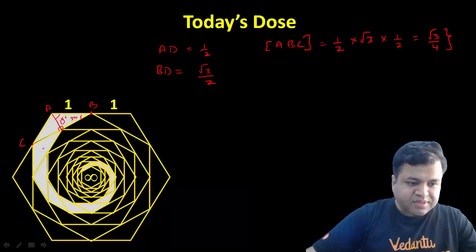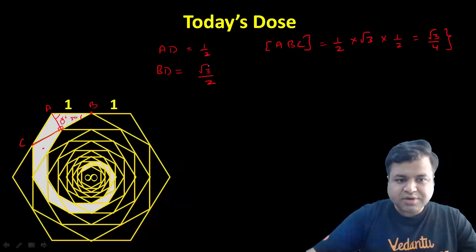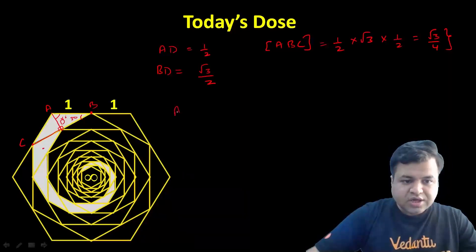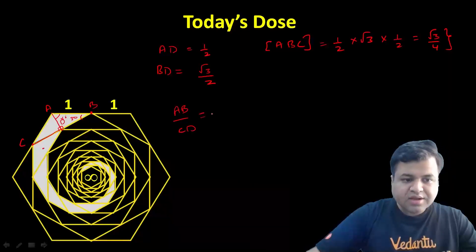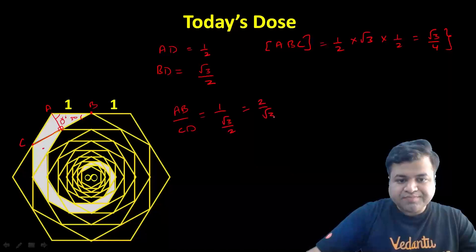Now let's consider this second triangle. Practically, the side AB and this side CD is root 3. So AB upon CD is simply 1 upon root 2, which is basically 2 upon root 3.